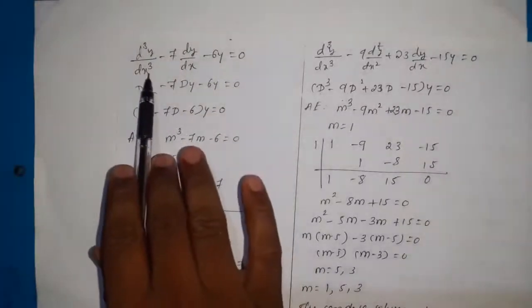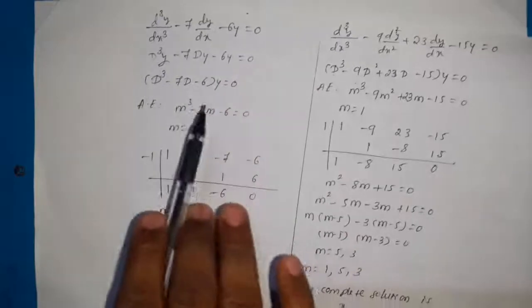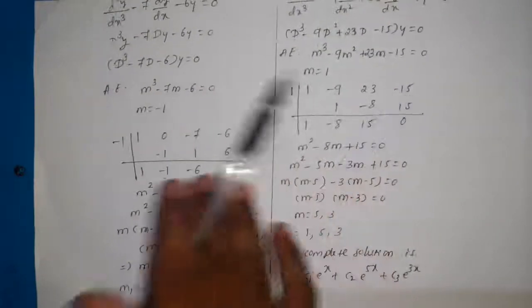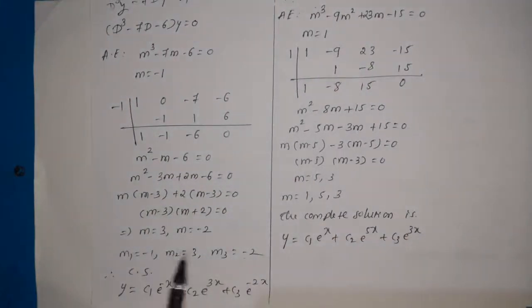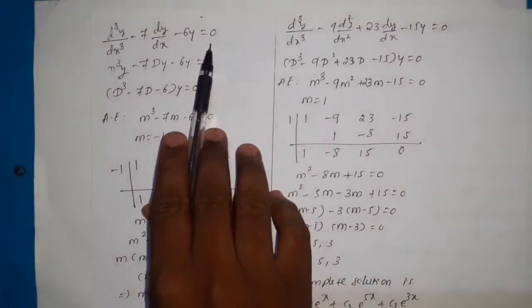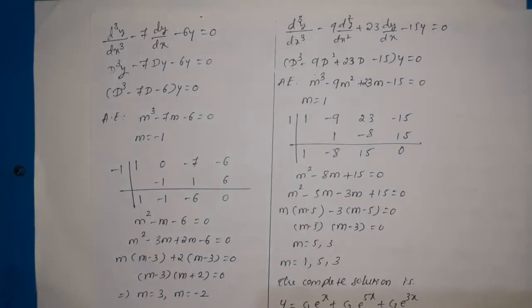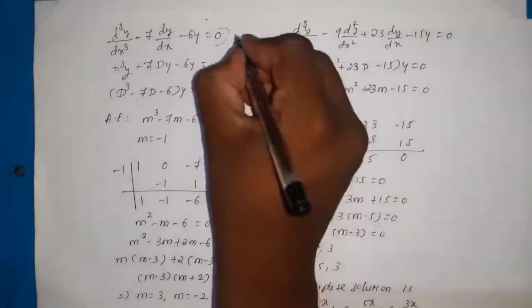In the previous example — solve d³y/dx³ minus 7(dy/dx) minus 6y equal to zero — we wrote the symbolic form, then the auxiliary equation, then found the roots using synthetic division. Those are the roots and we wrote the solution. That solution itself was the complete solution because the RHS was equal to zero. But now, instead of zero, there will be some function of x.